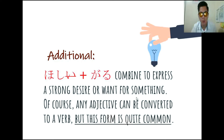She plus Garu combine to express a strong desire or want for something. Sa last topic natin na ga hoshii is I want something. But dito, hoshigaru is somebody wants something — expresses a strong desire or want for something. Of course, any adjective can be converted to a verb by adding garimasu. But this form is quite common — madalas itong ginagamit compared sa ibang adjective plus garimasu.